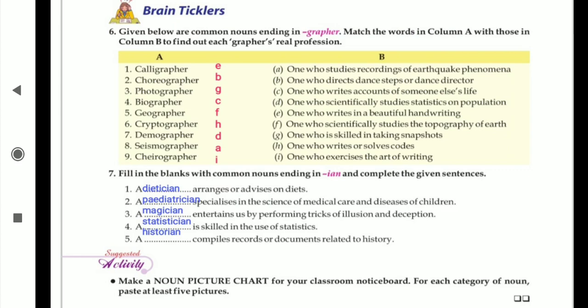Now biographer, what is the work of biographer? C - one who writes accounts of someone else's life. That is called the biographer. Now geographer, what is the geographer? One who scientifically studies the topography of earth, who does the study of earth. Now next was cryptographer.